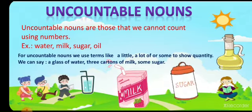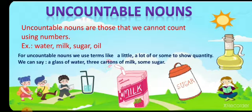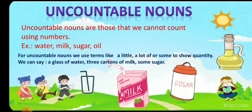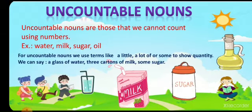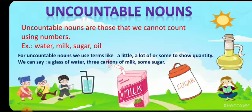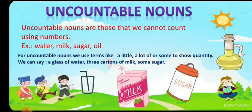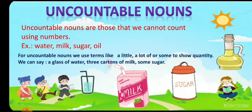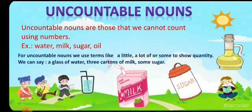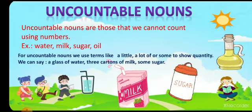Can we count water, milk, sugar, oil? No. But for uncountable nouns we use terms like a little, a lot of, or some to show quantity. And we can count like this: a glass of water or 5 glasses of water, 3 cartons of milk, some sugar — like that.